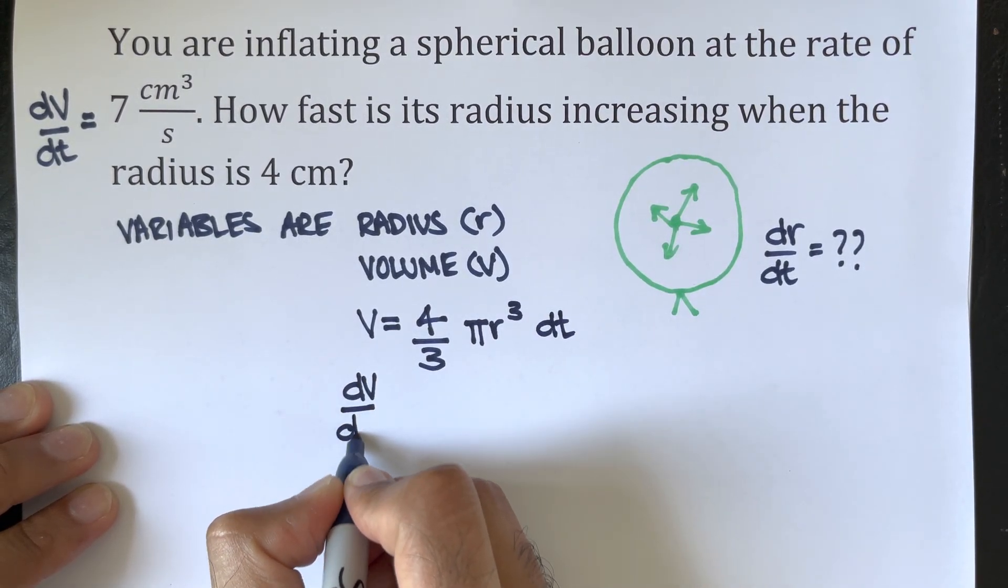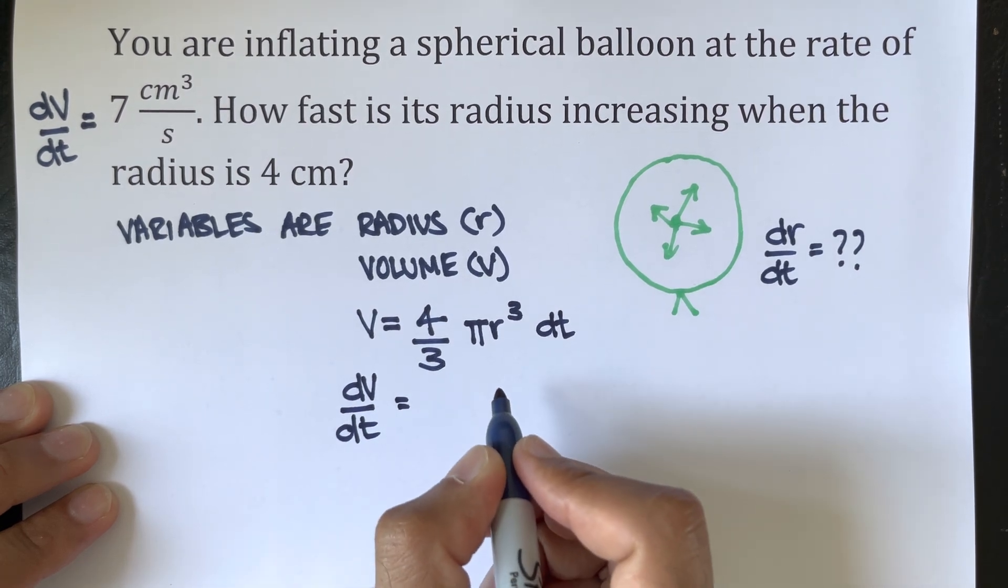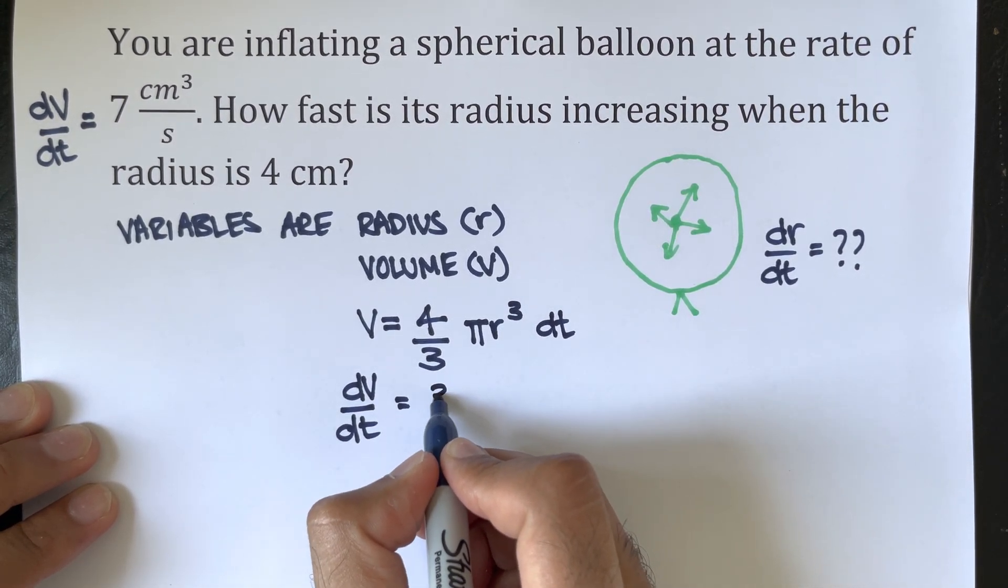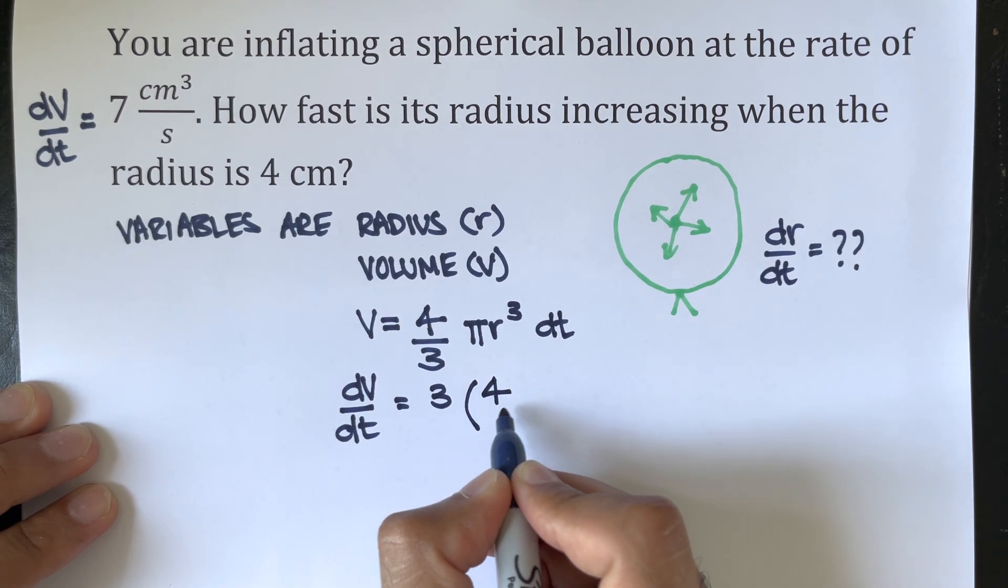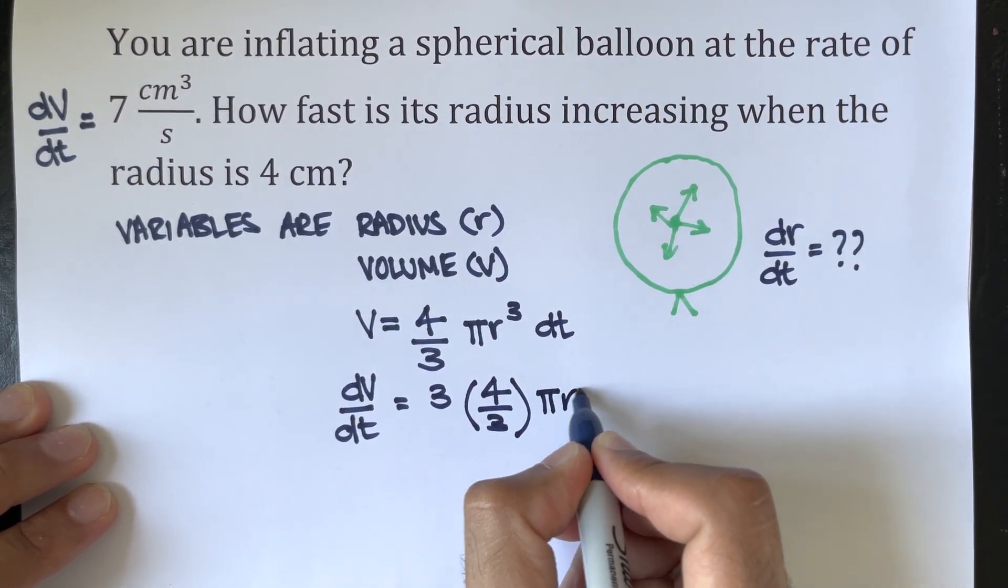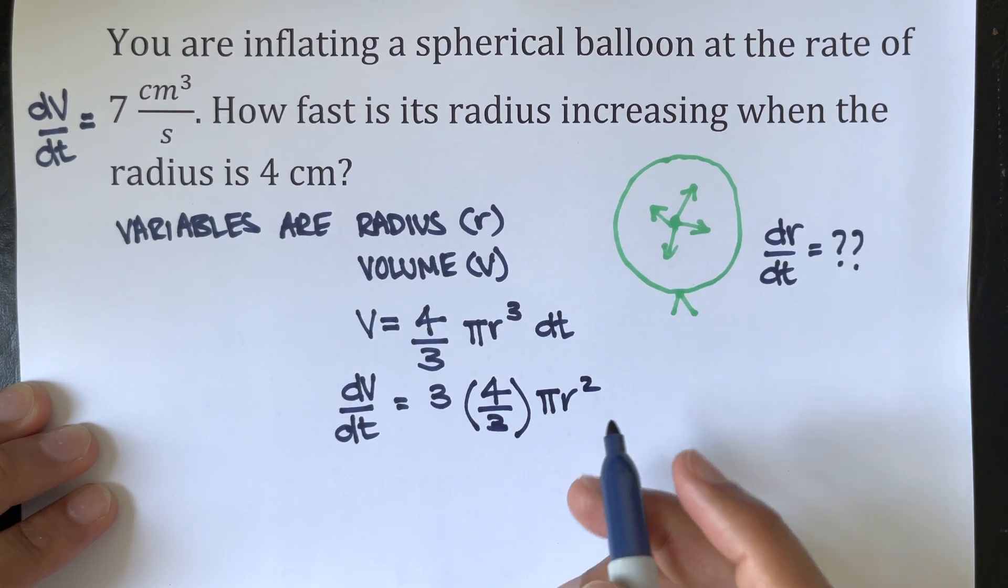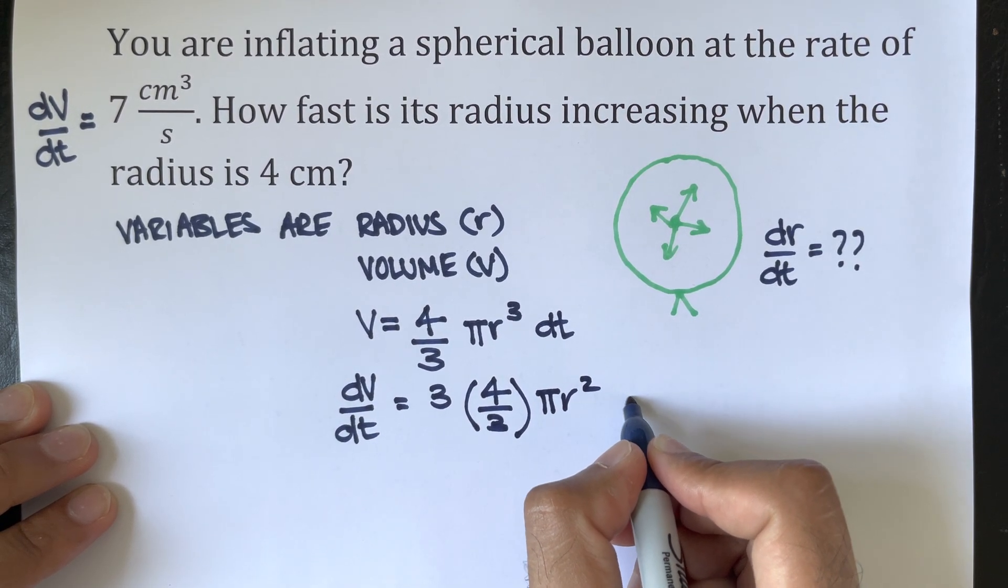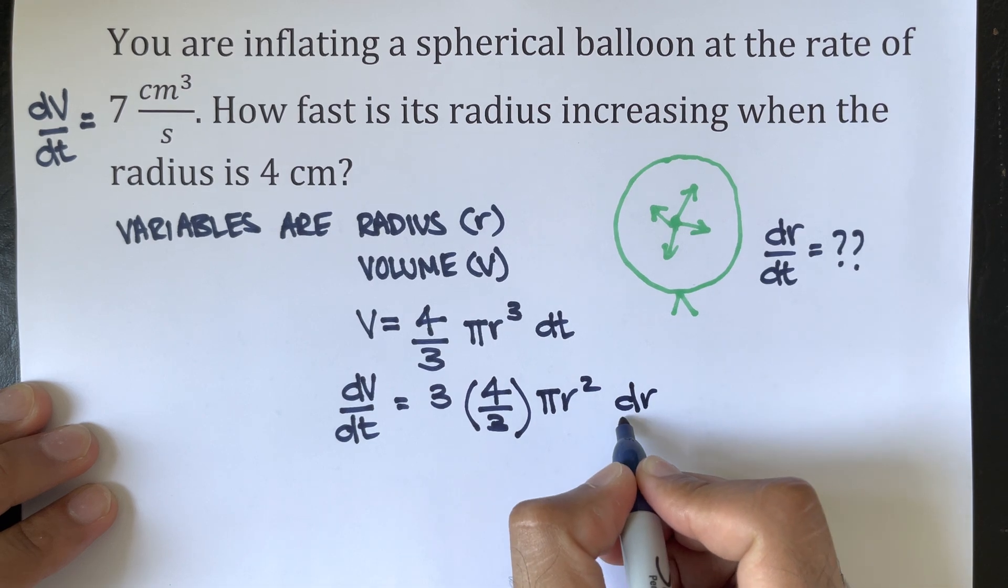The derivative of that will equal 3 multiplied by 4/3 π r² dr/dt. The 3's cancel off, giving us dV/dt = 4πr² dr/dt.